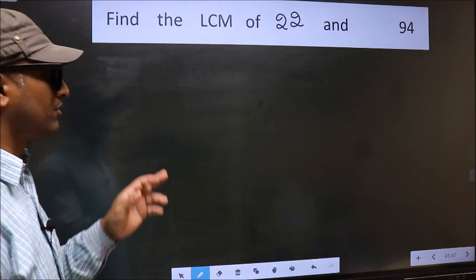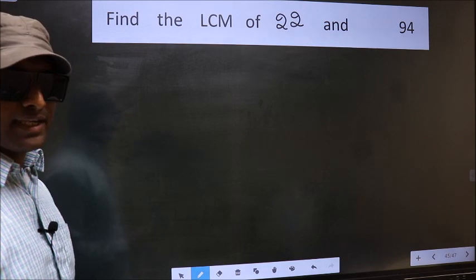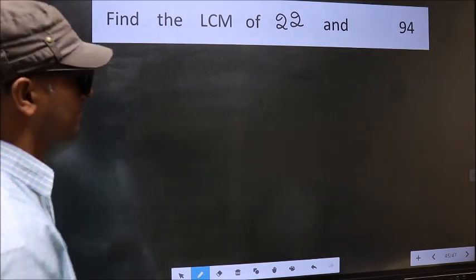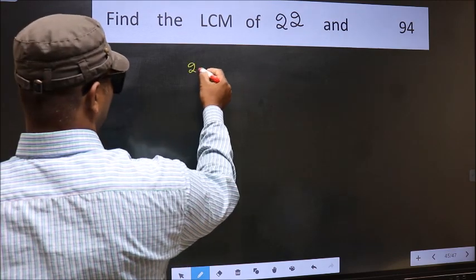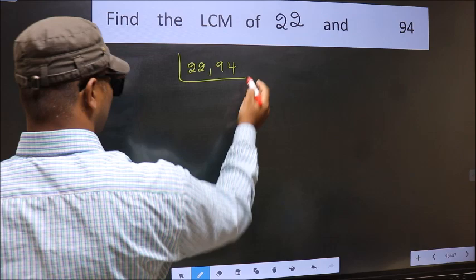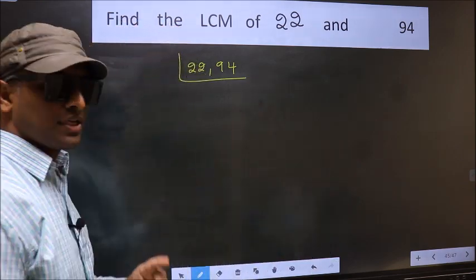Find the LCM of 22 and 94. To find the LCM, first we should frame it in this way: 22, 94. This is our step 1.